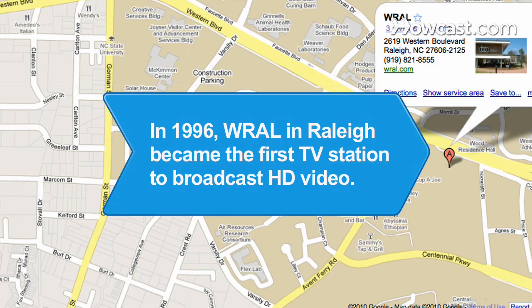Did you know? In 1996, WRAL in Raleigh, North Carolina became the first television station to broadcast high-definition video.